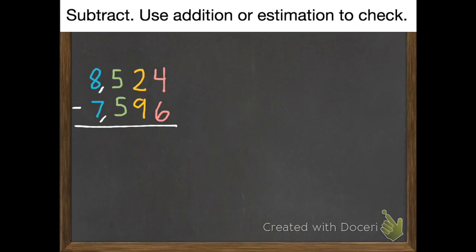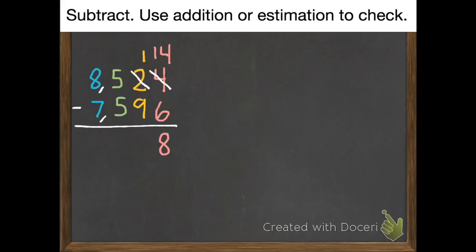Here's my second example — same instructions: subtract, then use addition or estimation to check. We start with our ones: 4 subtract 6, I need to borrow. They give us a 10, plus the 4 we already had, so we have 14. 14 subtract 6 is 8. Now the tens: 1 subtract 9, I need to borrow again. Now they have 4 hundreds, which gives us 10 more tens plus the 1 we had, so 11 subtract 9 is 2.